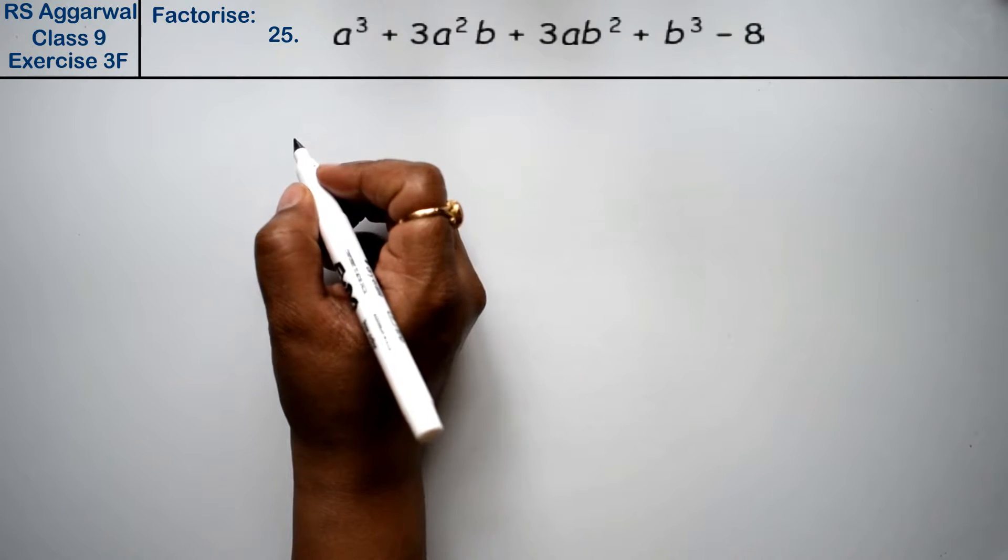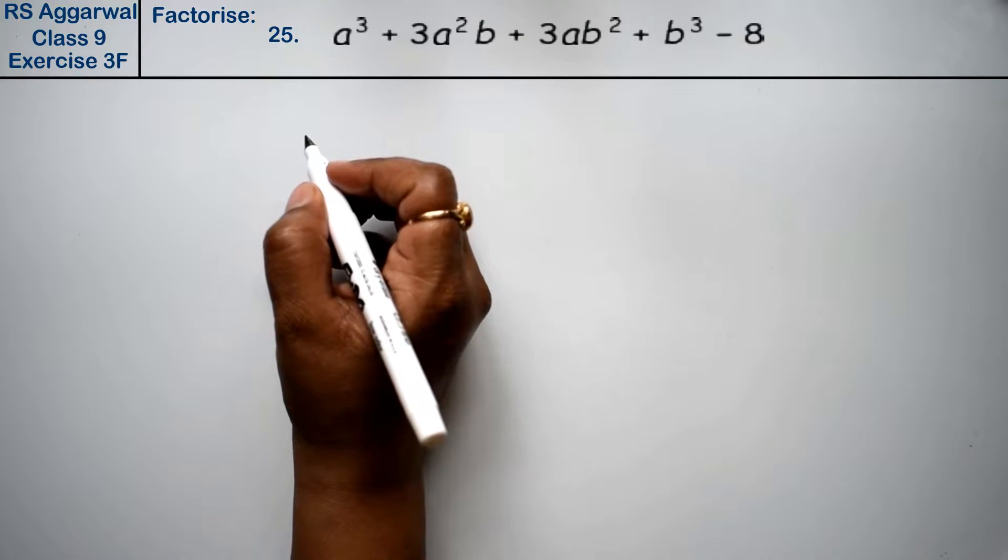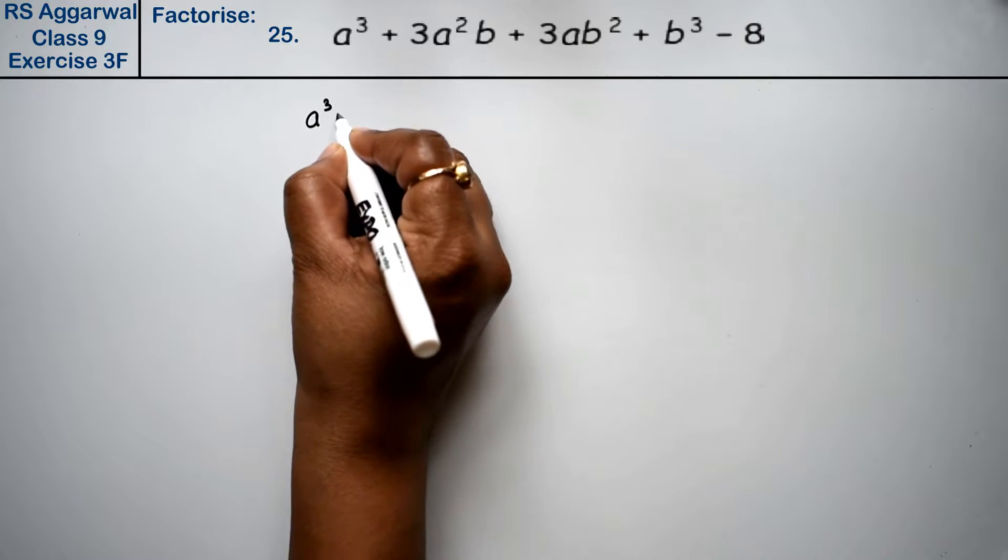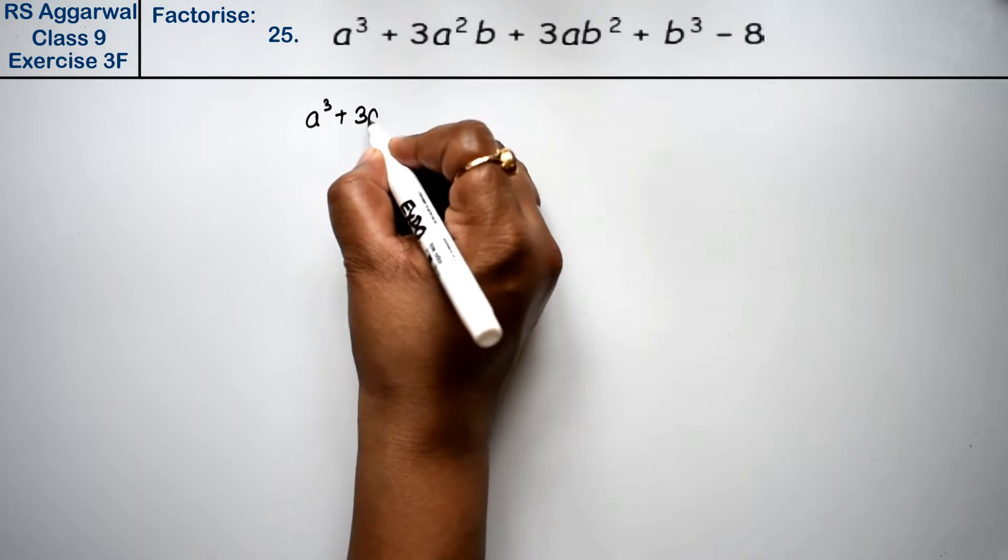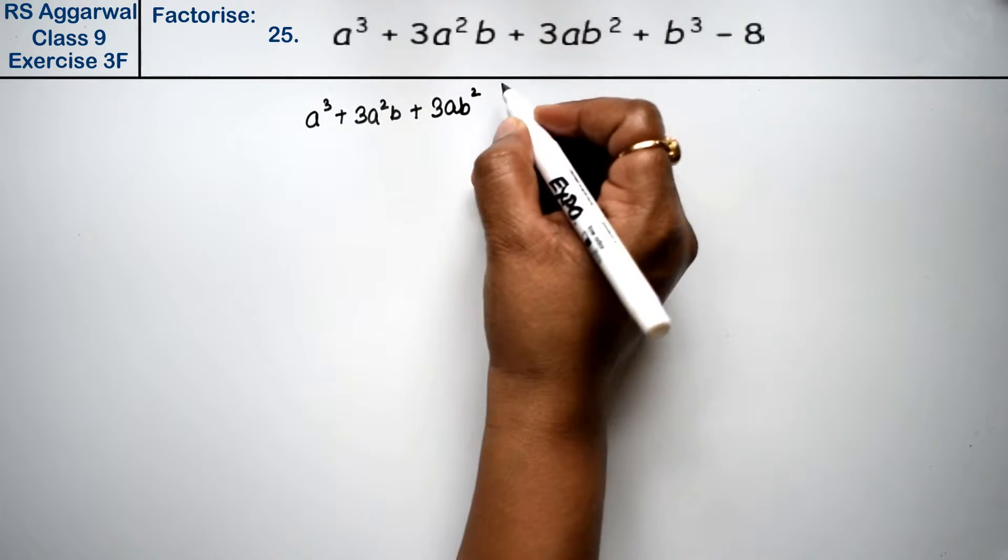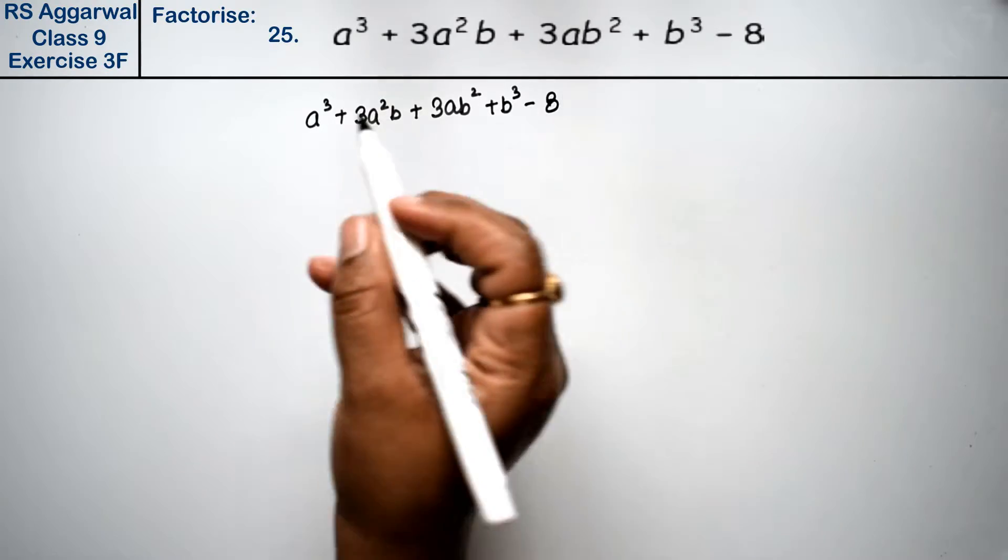Let's do question number 25 of exercise 3f, that is factorization of polynomial. Question number 25 is a cube plus 3a square b plus 3ab square plus b cube minus 8.